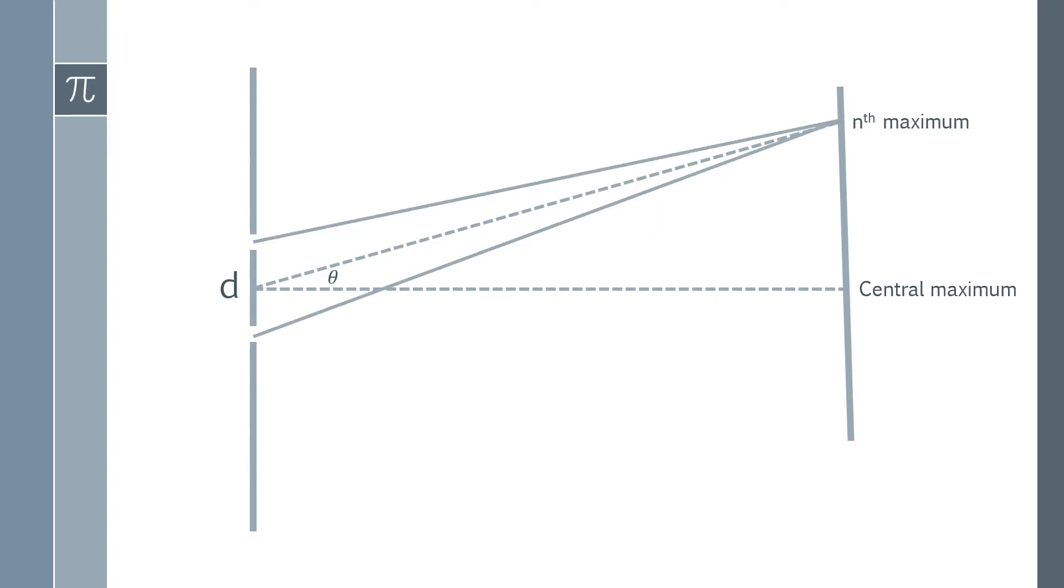We can also draw the rays coming from the two points in the slits, and we can work out that there's going to be a path difference between those two of n lambda. Because you've got a maxima, the maxima will only occur where you have constructive interference, which means that you must have a whole number of wavelengths of path difference for it to interfere constructively.